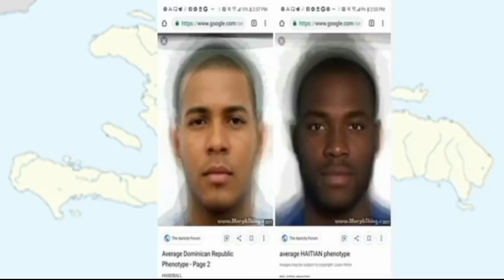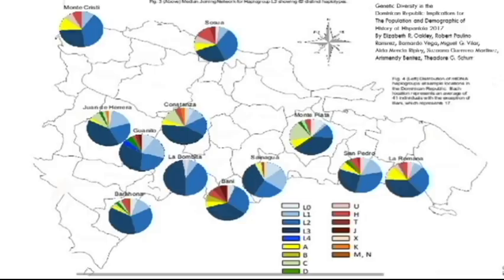Here you see percentages from the DR from the 2017 study. Various places in the DR were tested, and they show a substantial Native American ancestry — some places higher than others, but it is still present. Another part here is the differential distribution of Taino, African, and European mitochondrial DNA in the greater Antilles. Cuba, the Dominican Republic, and Puerto Rico have a similar pattern — substantial evidence of all three ancestries in their DNA — due to our shared demographic heritage.